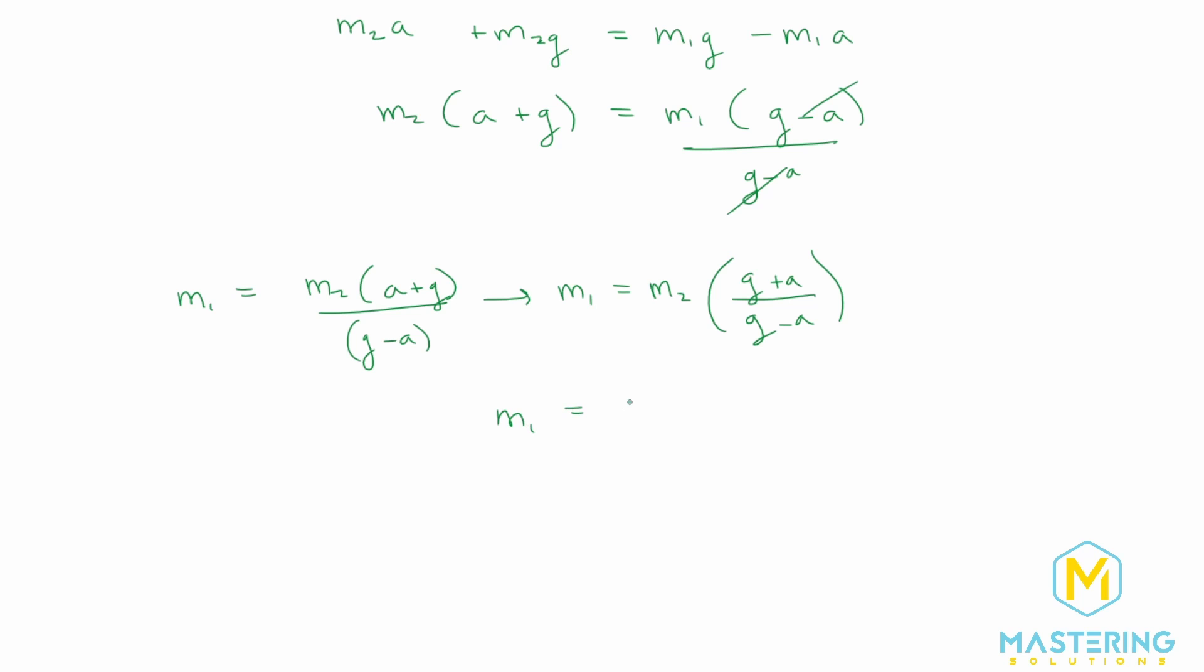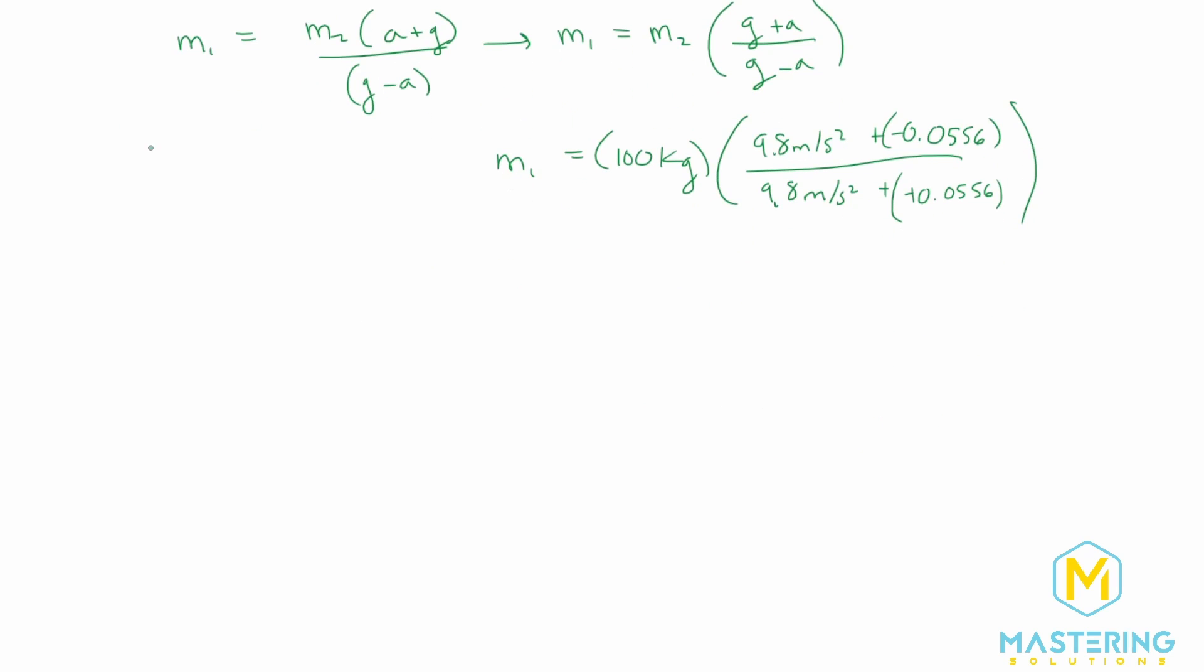So when we plug in our values, we have m2 we set is 100 kilograms. And then we have gravity is 9.8 meters per second squared on the top and bottom. And then we're going to add on the top 0.0, and that is a negative acceleration. And then we have a negative 0.0556 meters per second squared. So we'll have a positive on the bottom and a negative on the top. So just so that we don't get confused, let me write it one last final time. So m1 is equal to 100, and then that's 9.8 meters per second squared minus 0.0556 meters per second squared, divided by 9.8 meters per second squared plus 0.0556 meters per second squared.